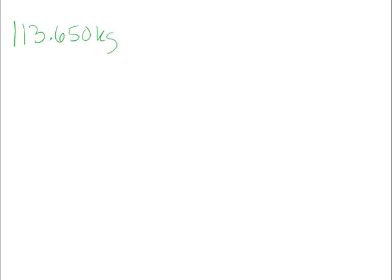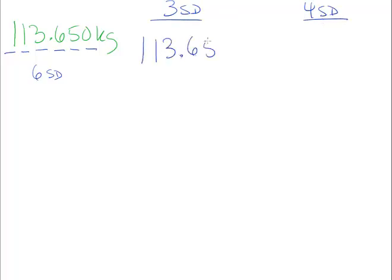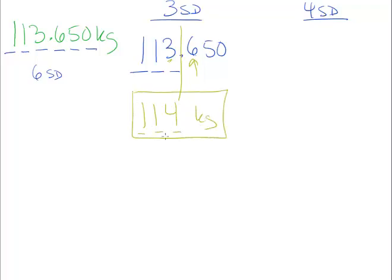Here's another example: 113.650 kilograms. Let's count the significant digits: 1, 2, 3, 4, 5, 6 — trailing zeros in a decimal number count, so there are six significant digits. Rounding to three significant digits: we need to keep 1, 2, 3, and place the barrier. We focus on 6, which is greater than 5, so our third digit increases. Rounded to three significant digits: 114 kilograms.